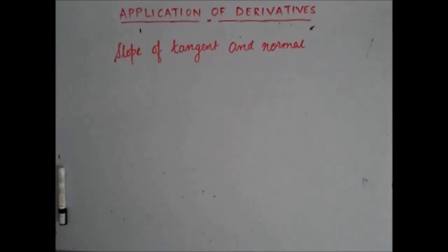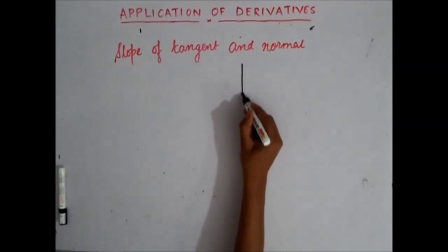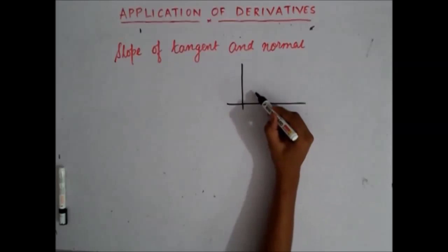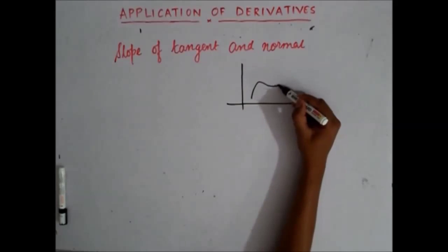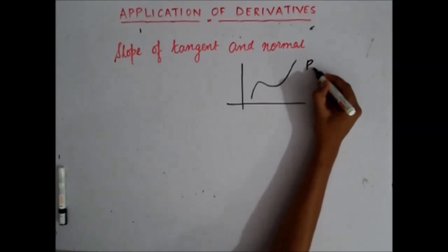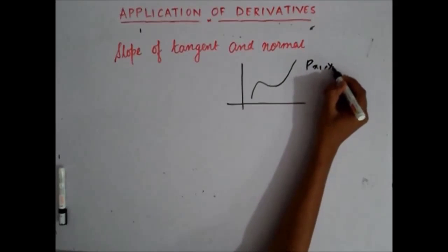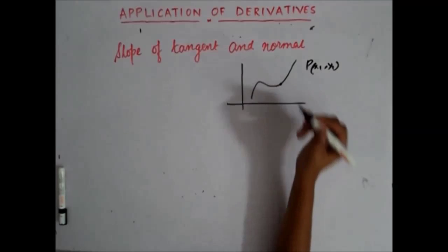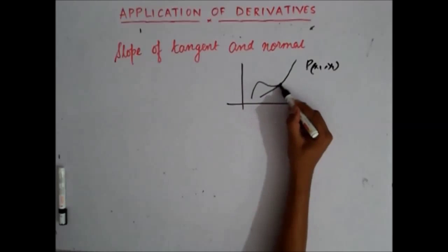Let's say you have a curve like this. You have a point P at one by one, which is this. You draw a tangent at this point. You draw a normal at this point.